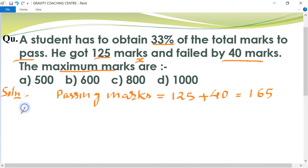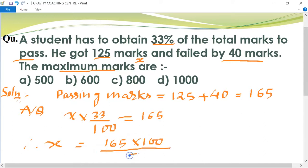According to the question, x times 33% equals the passing marks, which is 165. Therefore, x equals 165 into 100 upon 33.